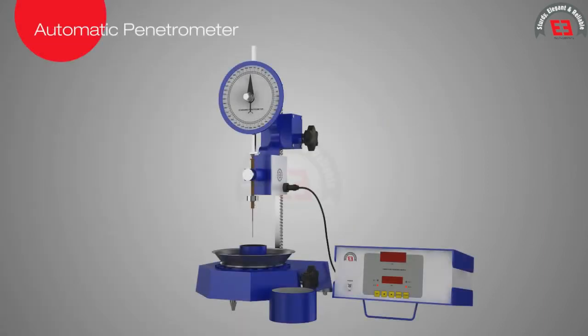In automatic penetrometer, on release through the timer for 5 seconds, the penetration needle penetrates into the bitumen specimen without appreciable friction and gives penetration value in units of one-tenth of a millimeter.